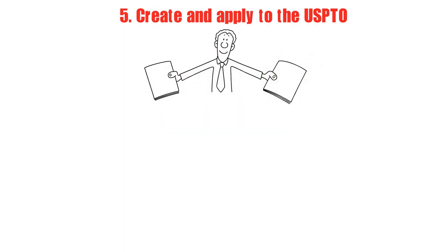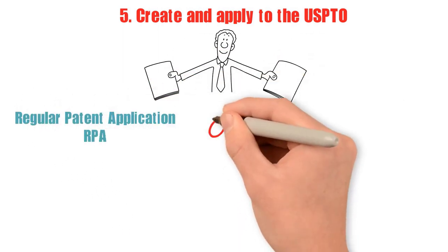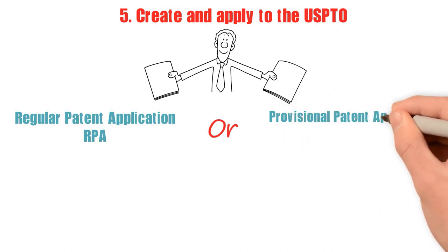5. Create and apply to the USPTO. You have an option when you file with the USPTO: either a complete regular patent application RPA or a provisional patent application PPA can be submitted.